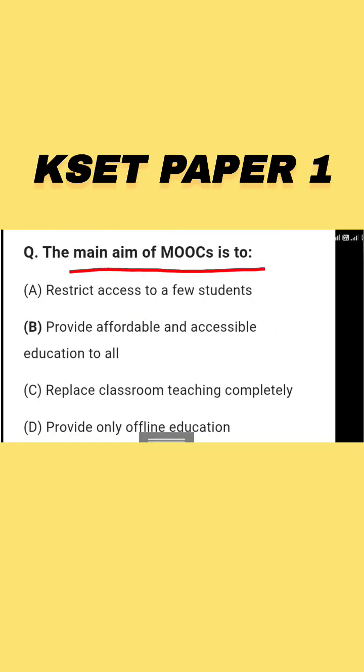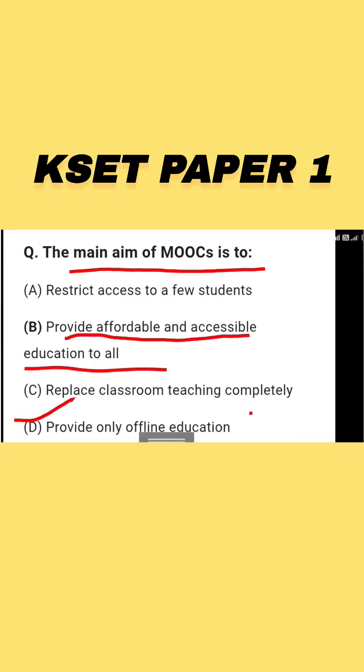Next question: the main aim of MOOCs is to — this is very important. Options are: A) Restrict access to new students, B) Provide affordable and accessible education to all, C) Replace classroom teaching completely, D) Provide only offline education. The right answer is option B — provide affordable and accessible education to all.